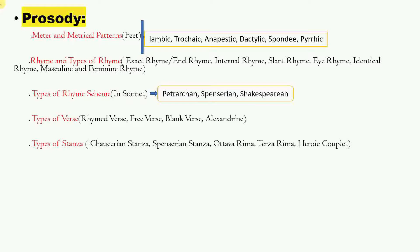I've arranged this in a chronological way: first understand meter, then rhyme, then rhyme scheme, then verse, and then types of stanza. Types of stanza include: Chaucerian stanza, Rhyme Royal, Spenserian stanza, ottava rima, terza rima, and heroic couplet. Questions from stanza haven't been asked in PUBDET yet, but you might expect a stanza to be identified.